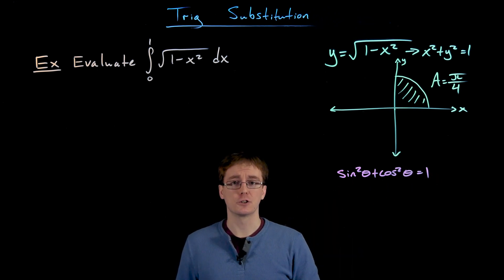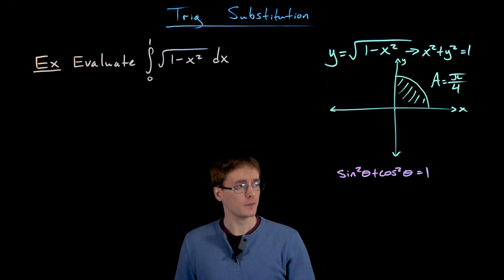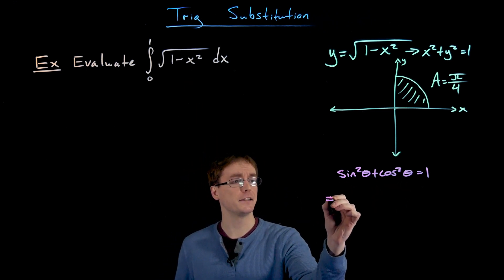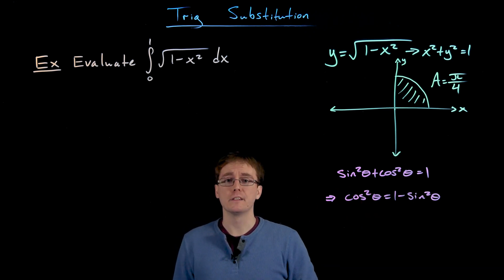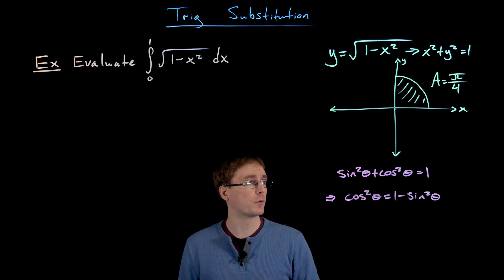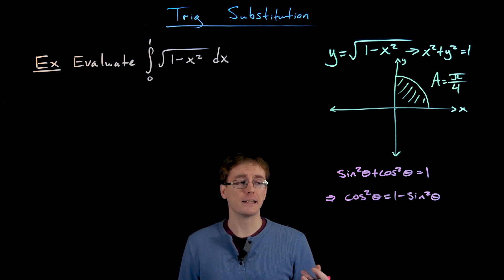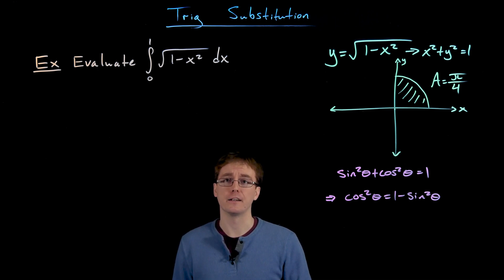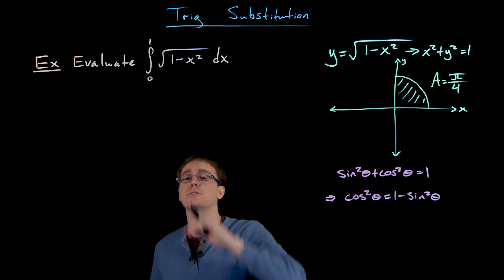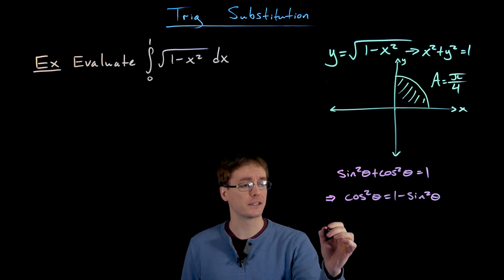We have a 1 on one side of our trig identity, and in our integrand we have that 1 minus some quantity squared. To make our trig identity look closer to our integrand, we can subtract one of the squared trig functions from each side. If we subtract sine squared from each side of our Pythagorean identity, we can rewrite it as cosine squared of theta equals 1 minus sine squared of theta. Now we can think of that 1 minus sine squared as resembling our 1 minus x squared underneath the square root. To get the square root in the mix, we take the square root of each side.